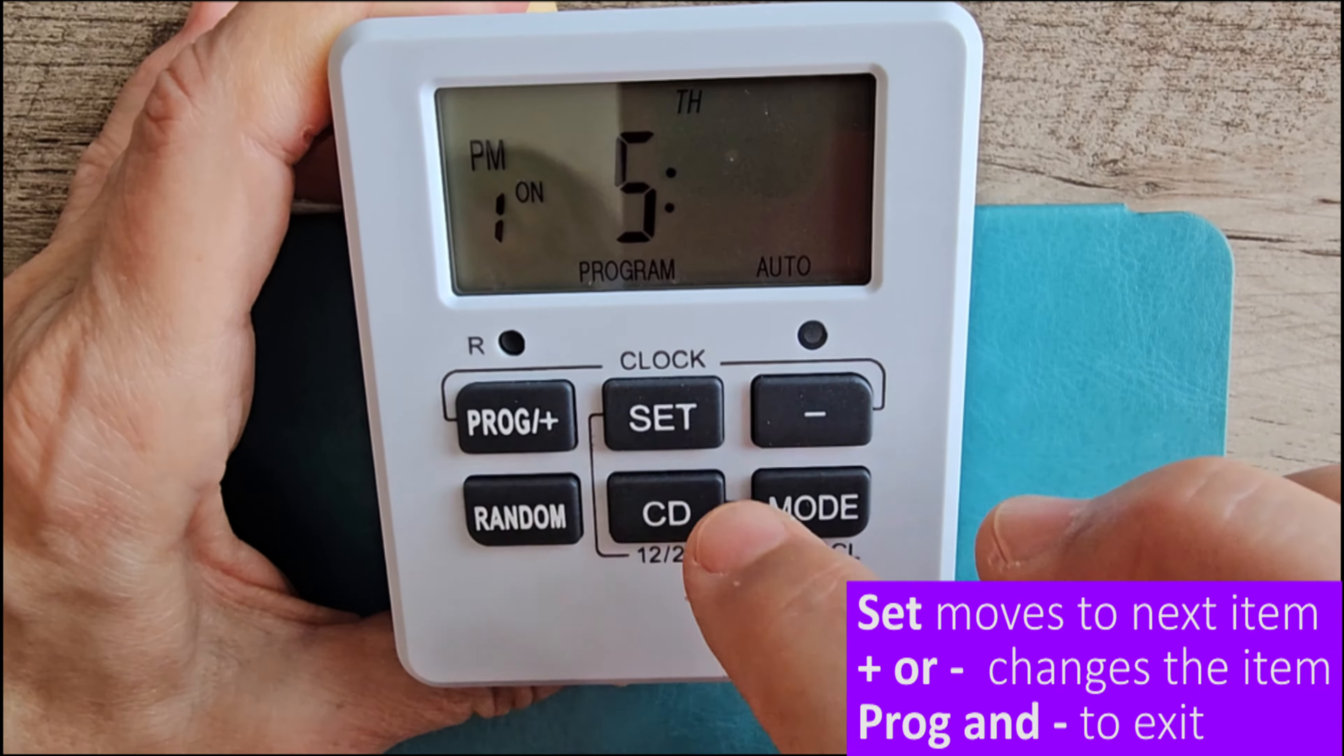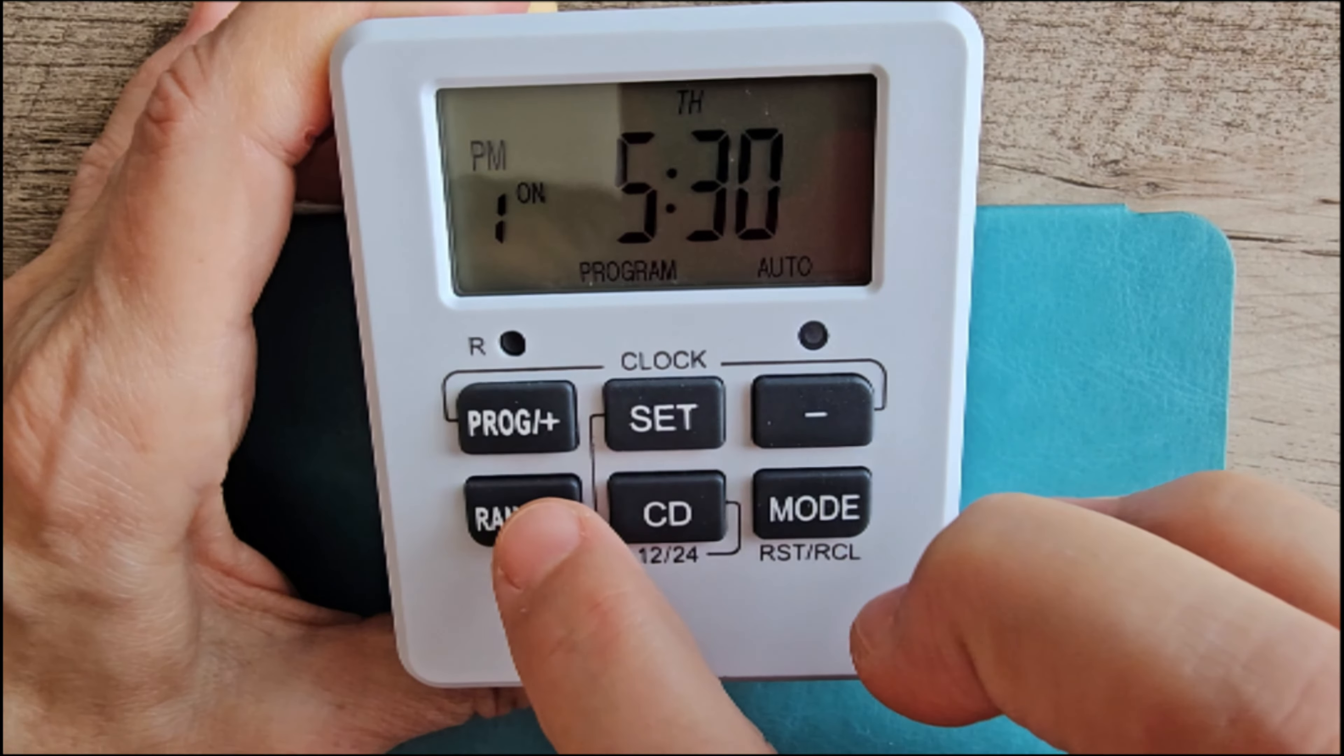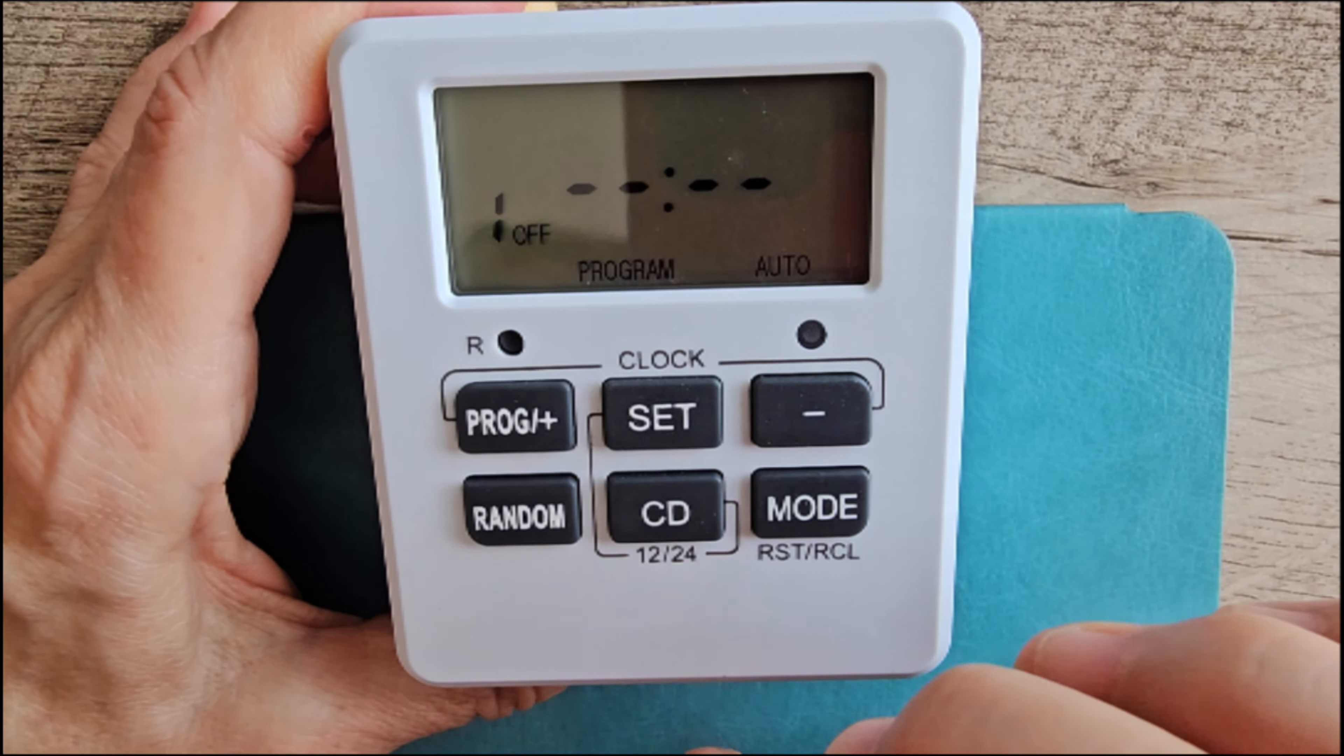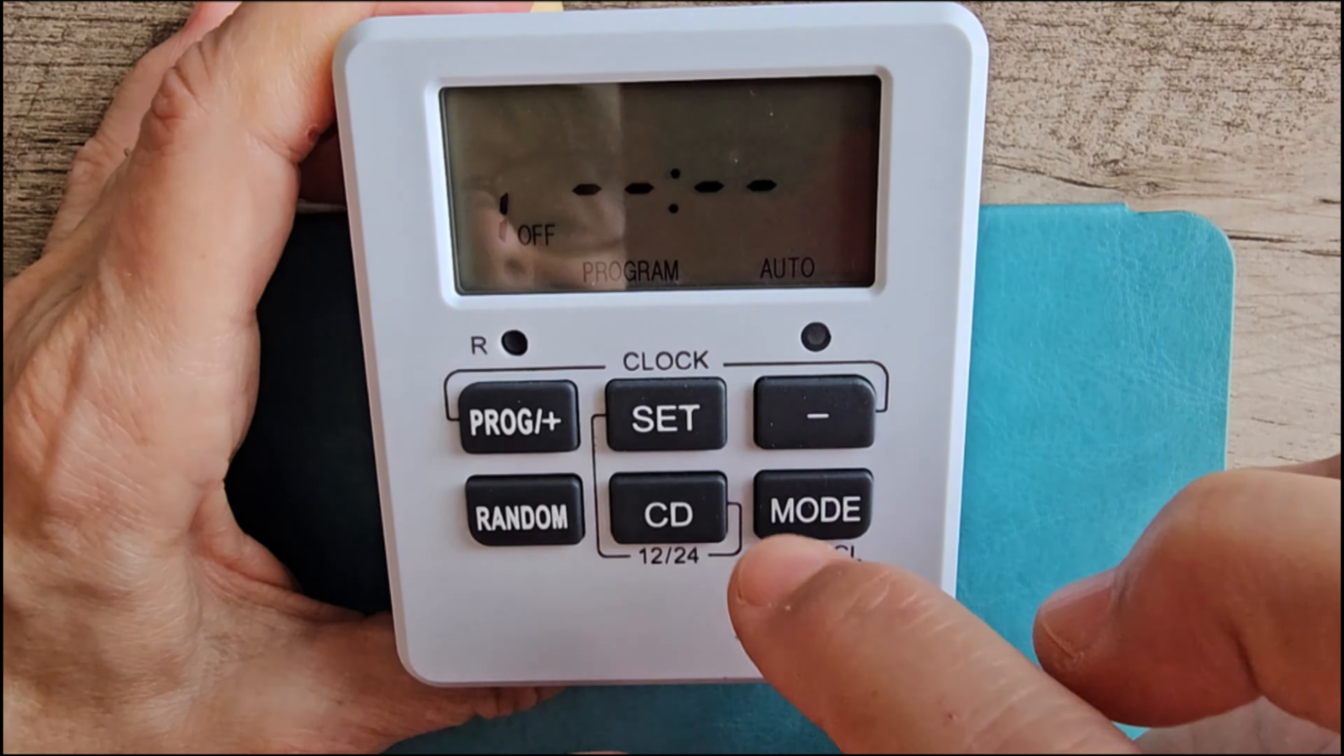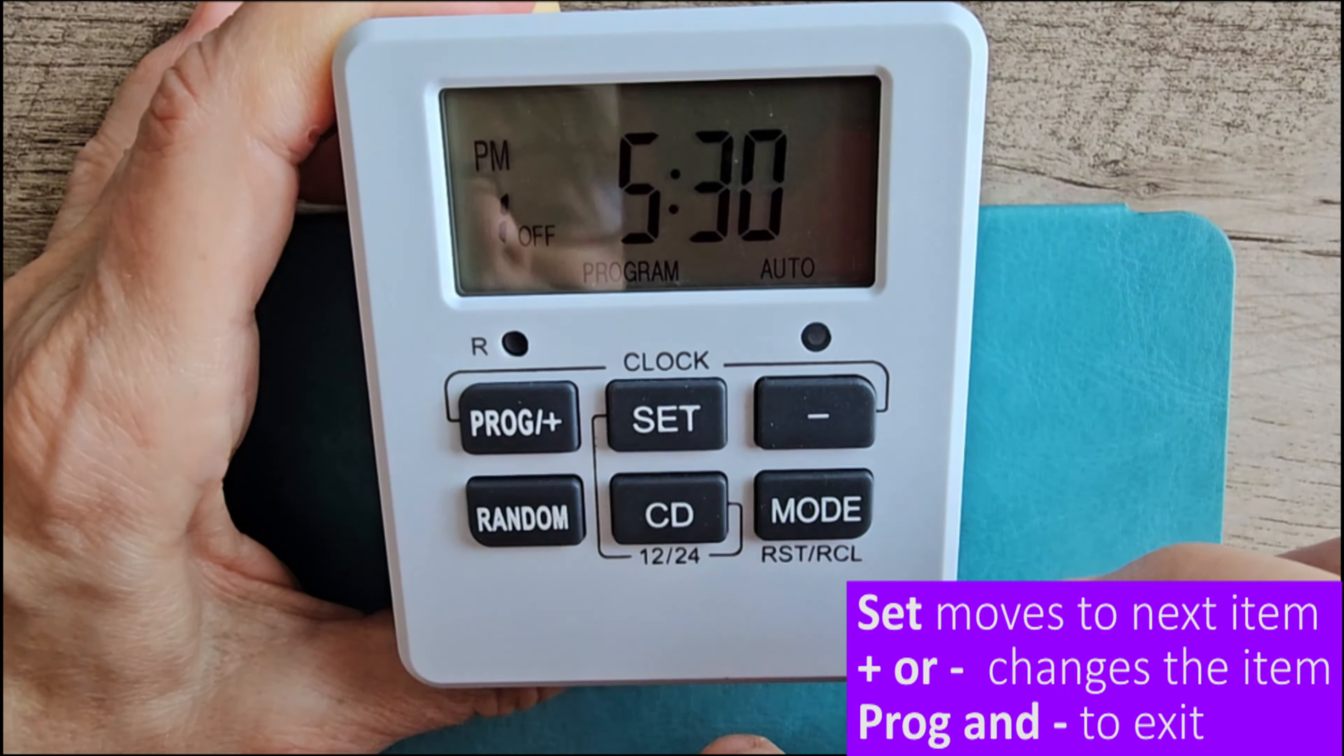Now I'll press set to go to the hour. I'm going to have it come on. I'm going to press the plus button. I'm going to have it come on at 5:30. Press set again. And I'm good with 5:30, but if I wanted to change it, just go up and down. Now we're done with one on.